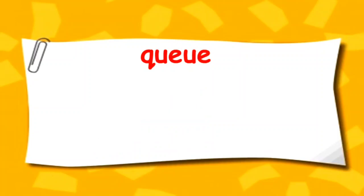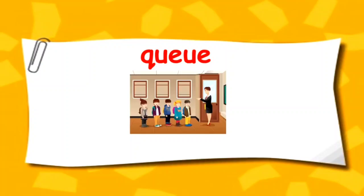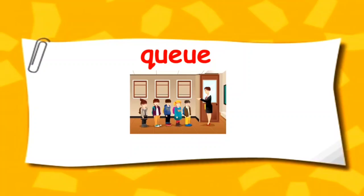The word is QUEUE. The word queue refers to the line of people or cars waiting to do something. Let us look at the picture. You can see students have lined up — they are standing in a queue. I have used the word queue in a sentence like: Students are standing in a queue. It's always good to wait in the queue rather than pushing each other. This is the end of video 2.